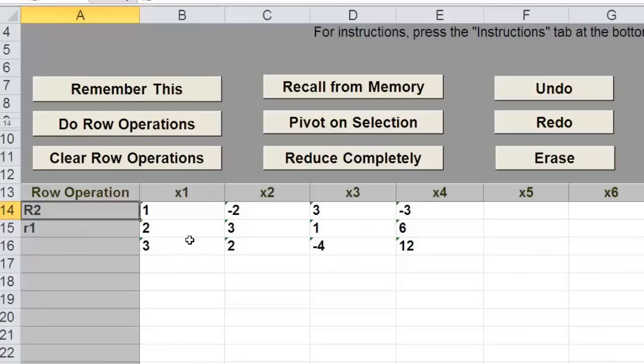So now we have the augmented matrix with a 1 in the upper left hand corner, and we can now apply other Gauss-Jordan row operations in order to reduce this matrix. We'll clear the row operations.